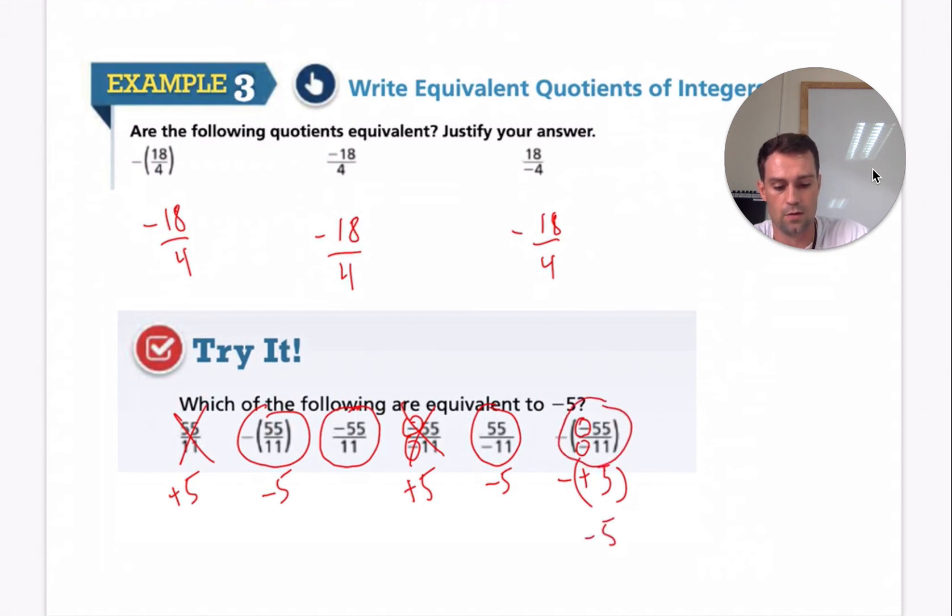So I will highlight the ones that are equivalent to negative five. There we go. All right. Write down any questions that you might have. This was a short lesson. Get a lot of practice out there. Let me know if you have questions on the MathXL. Bye.